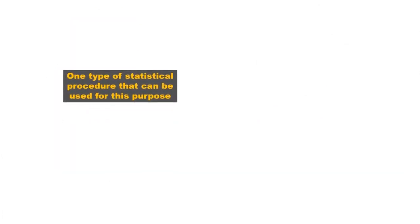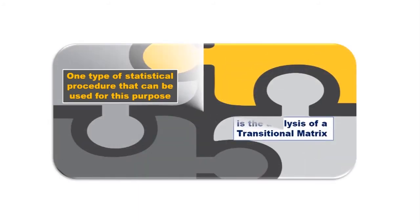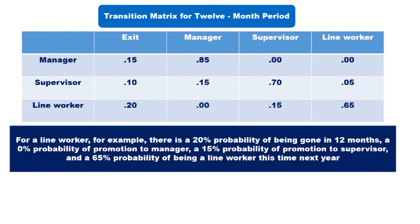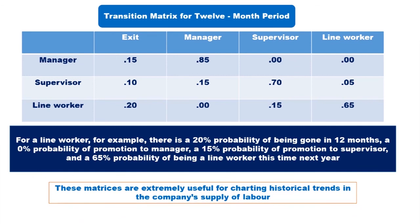One type of statistical procedure that can be used for this purpose is the analysis of a transitional matrix. In an organisation, we are looking at the matrix for a manager, supervisor, and line worker and their probabilities of transition. For a line worker, there is a 20% probability of being gone in 12 months, a 0% probability of promotion to manager, a 15% probability of promotion to supervisor, and a 65% probability of being a line worker this time next year. These matrices are extremely useful for charting historical trends in the company's supply of labour.